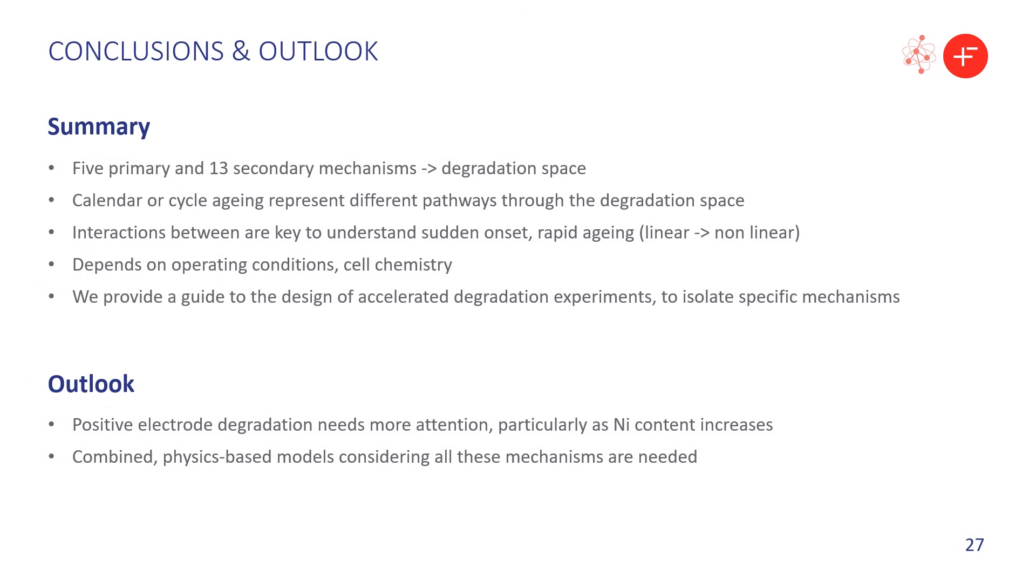To summarize, we have classified and explained the main mechanisms and constructed a map of degradation space, showing the interconnections, which are key to understanding the onset of rapid aging. We provide a guide to experimentally triggering the different mechanisms and discuss the role of models. More work is needed, however, to understand degradation in the positive electrode and to combine models.